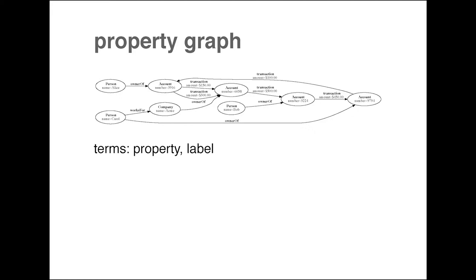The abbreviation for property graph is PG - which is super confusing when you go looking for information about graph databases, because you'll see PG everywhere.